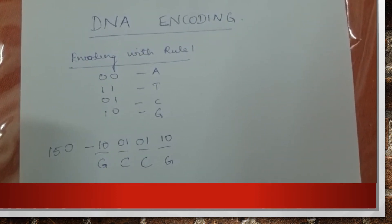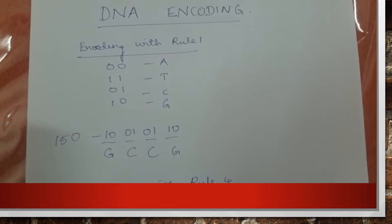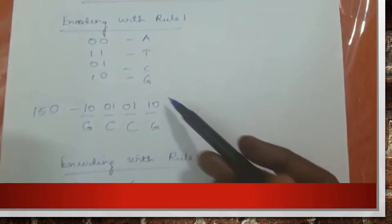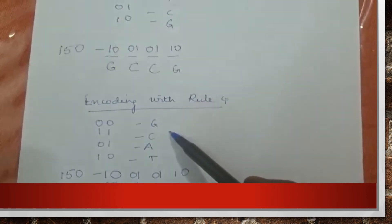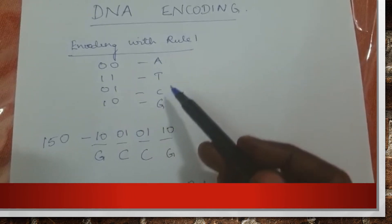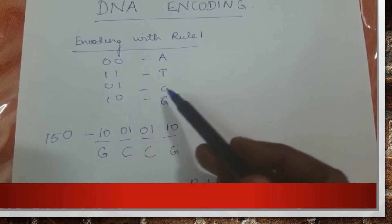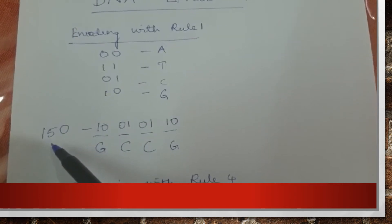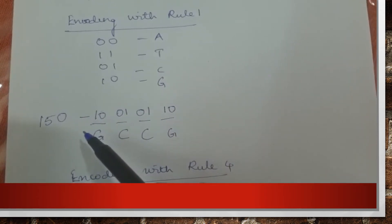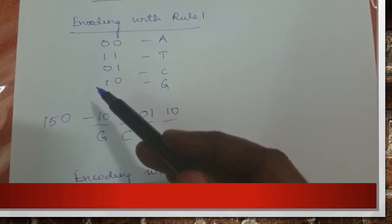Now let's look at an example of how to encode and decode using DNA encoding rules. We have eight rules and can use any one for encoding and decoding. Here I consider rule number 1 and rule number 4. For rule 1: 00 is mapped to A, 11 to T, 01 to C, and 10 to G. Notice that 00 and 11 are complements, as are A and T; and 01 and 10 are complements, as are C and G. Now let's take the example of 150 as data. We convert it to binary and get 10 01 01 10.